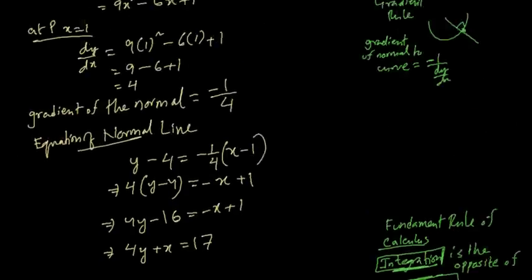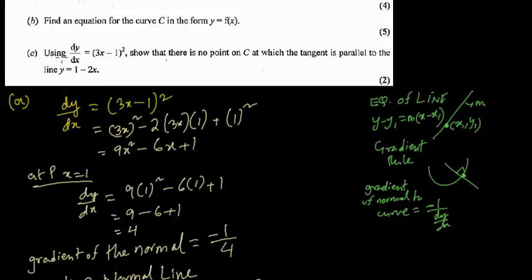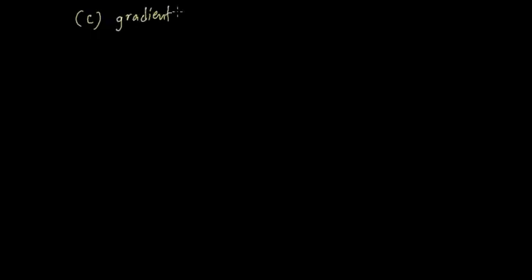Question c asks: show that there is no point on the curve such that the tangent is parallel to the line y = 1 - 2x. In y = mx + c format, the gradient of this line is -2 (the coefficient of x).